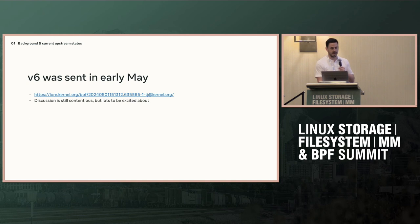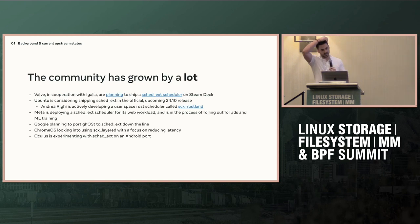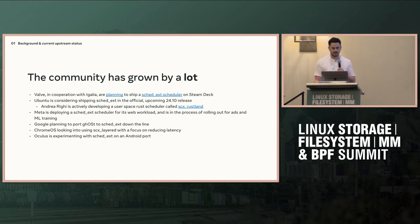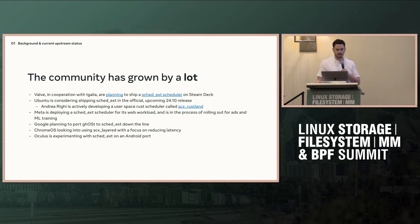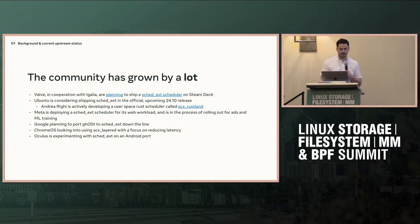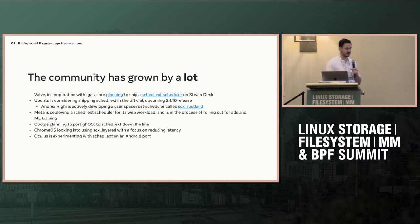Latest on upstream: the V6 patch set was sent in early May. There's still discussion, but there's a lot to be excited about. The community has really grown tremendously over the last year. Valve, in cooperation with Egalia, are planning to ship a SCEDEX scheduler on the Steam Deck. Ubuntu is also considering shipping SCEDEX in the upcoming 24.10 official release, which would be huge. Andrea Riggi, who works at Canonical, has been writing a scheduler called SCX Rustland — the user space scheduler I mentioned that's been doing really well even though it's user space. We're deploying schedulers internally at Meta. Chrome OS is apparently experimenting, Oculus is playing around with it on Android, so there's a lot of people using it at this point.